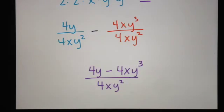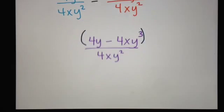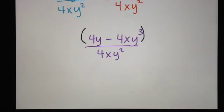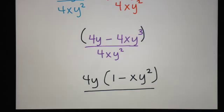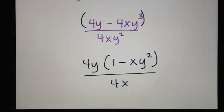Any time we have something in the numerator or denominator that has pluses or minuses in between, we put parentheses around it — that's considered one group. So if I want to see if it can simplify, I have to factor whatever is inside that group. The top can be factored using a GCF. I have a GCF of 4y, because each of those two pieces has a 4 and a y in it. So I take out the 4y. From the first piece, dividing out 4y leaves 1. From the second piece, dividing out 4y leaves xy squared. And then the bottom is 4xy squared.